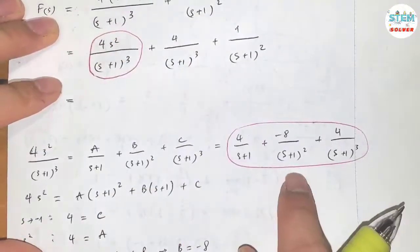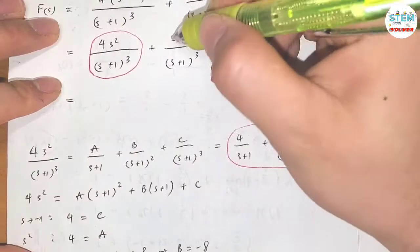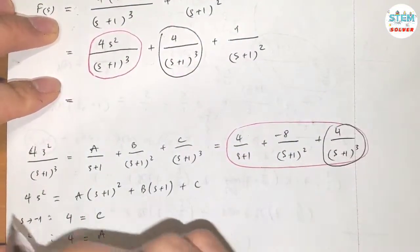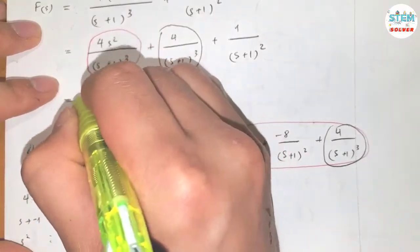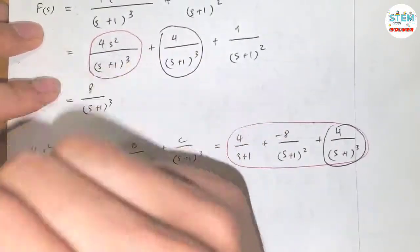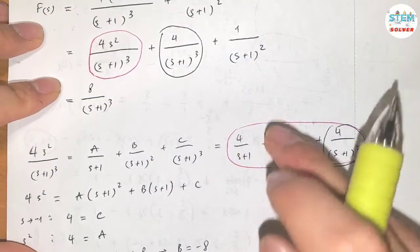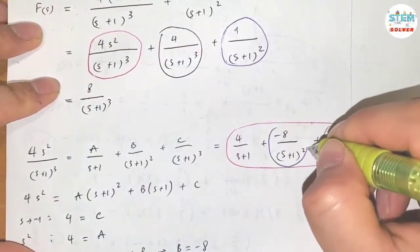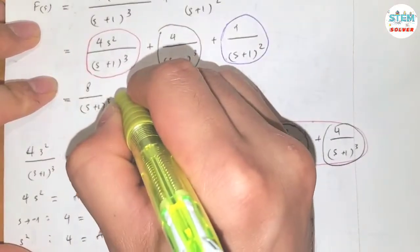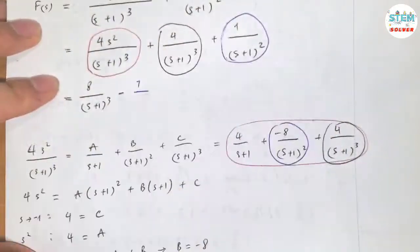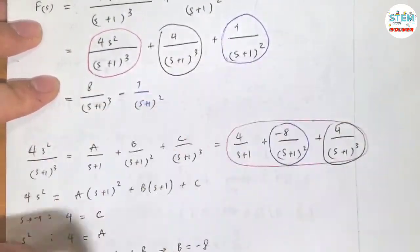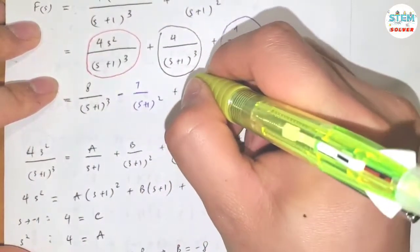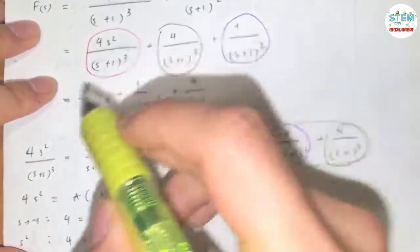Combining the (s plus 1) squared terms: negative 8 over (s plus 1) squared plus 1 over (s plus 1) squared gives negative 7 over (s plus 1) squared. And rewriting the remaining term gives 4 over (s plus 1). So F(s) equals 4 over (s+1) minus 7 over (s+1)² plus 8 over (s+1)³.